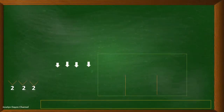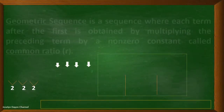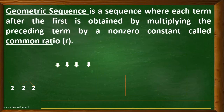Now, let's define first geometric sequence. Geometric sequence is a sequence where each term after the first is obtained by multiplying the preceding term by a non-zero constant, and that non-zero constant is what we call the common ratio, with symbol small letter r.